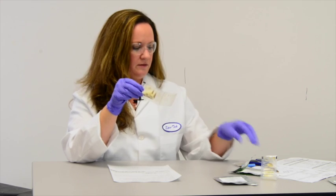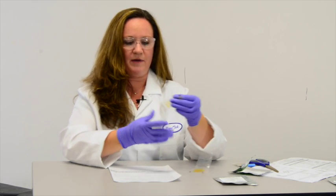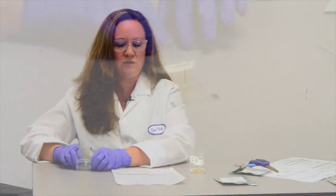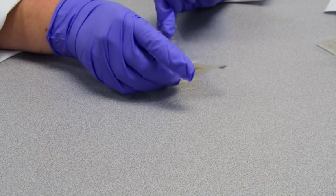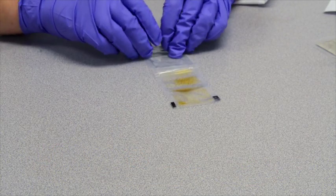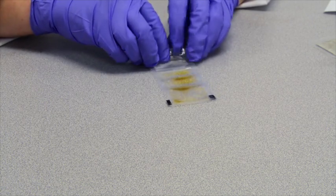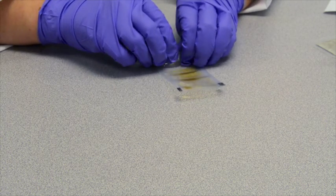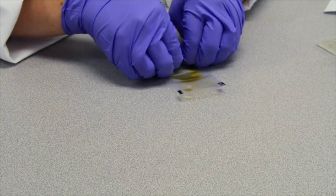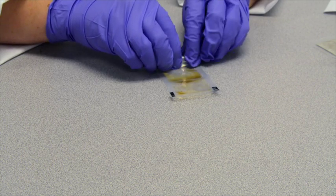In order to do this, start by placing the pack on a flat surface and slowly roll one end of the pack towards the center sealed area. Once enough pressure has built up, the inner sealed area will burst open and allow for the two parts to mix together.